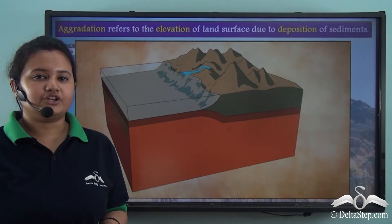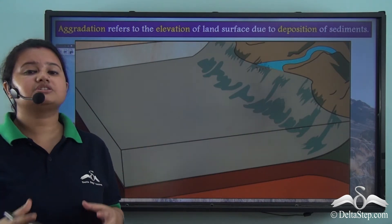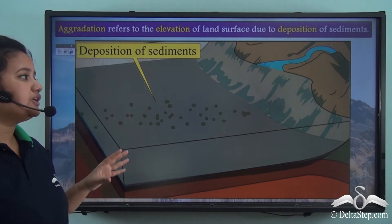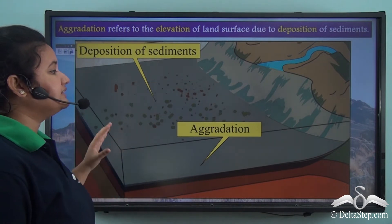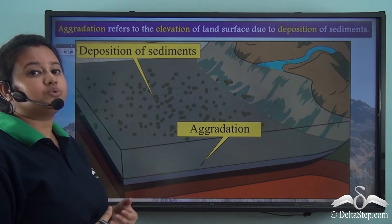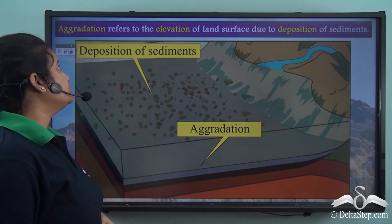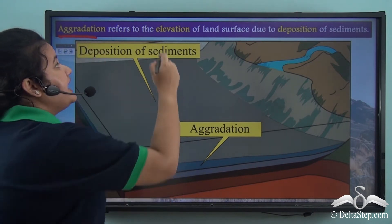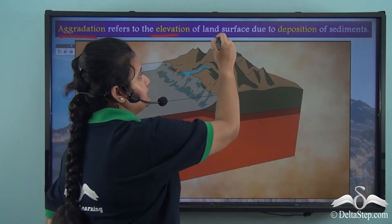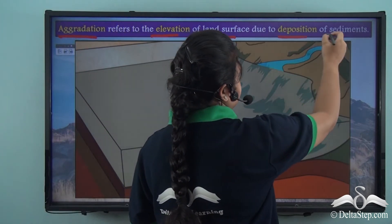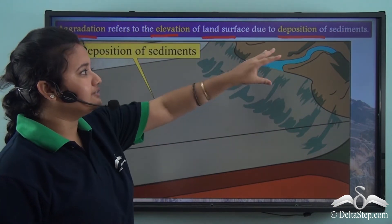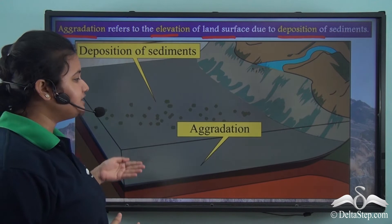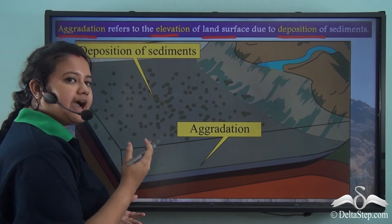The height of the mountain is continuously decreasing due to erosion by wind or river. These eroded sediments are deposited at the riverbed, which causes the height of the riverbed to increase. This process is known as aggradation. Aggradation refers to the elevation or increase in height of land surface due to deposition of sediments. In this video, we can see the river carrying eroded sediments and depositing them at the riverbed, causing the height of the riverbed to increase.